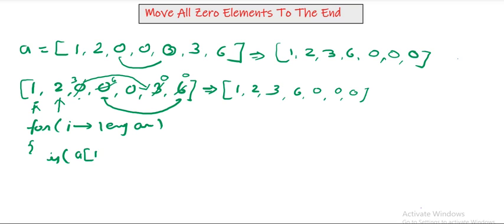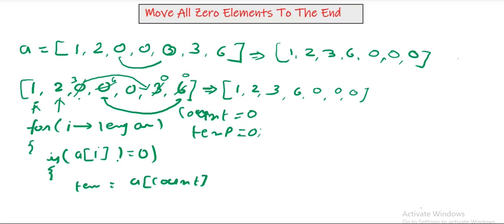We will write the if condition that array of i not equal to 0. Then only it will go to the zero. 1 which is not equal to 0, then what we will do? We will count - we'll create the variable count marked as 0 and we also need a temporary variable to swap the elements.